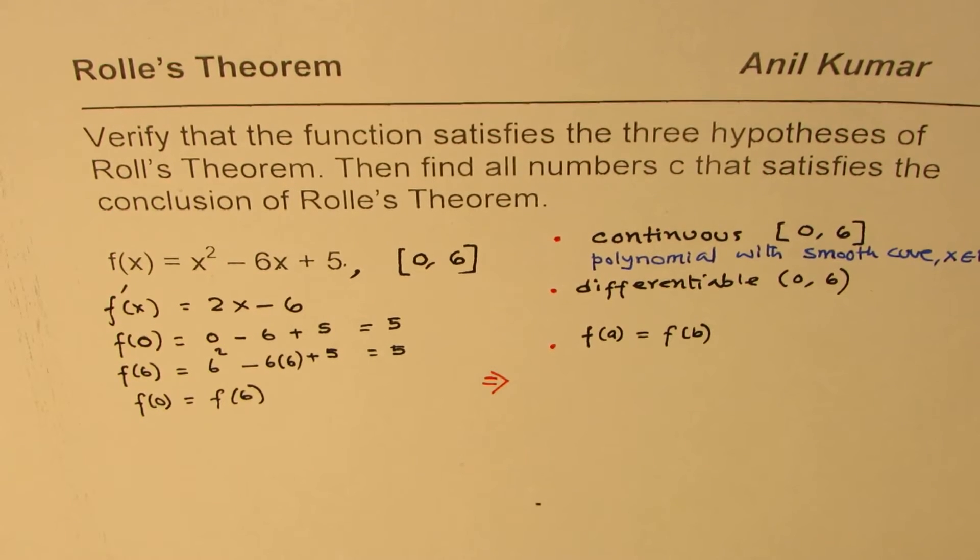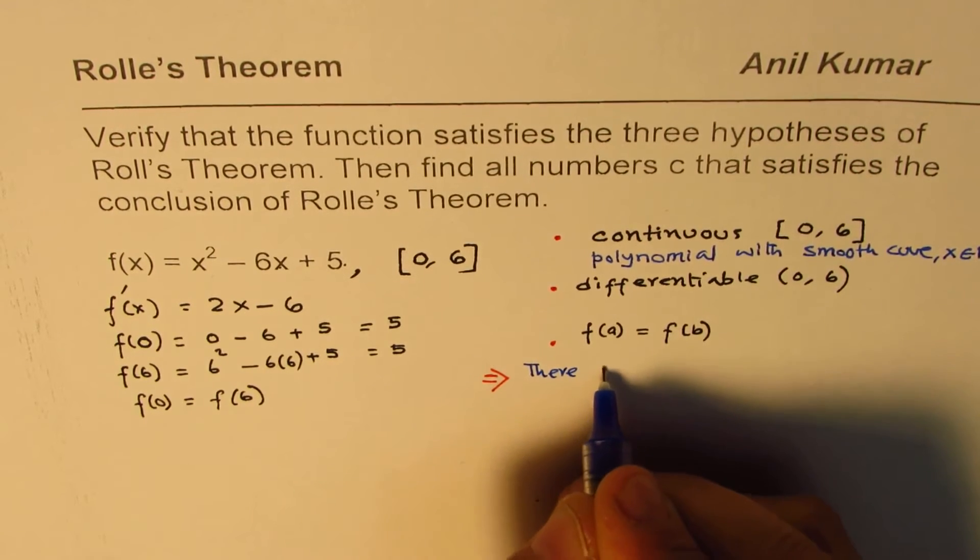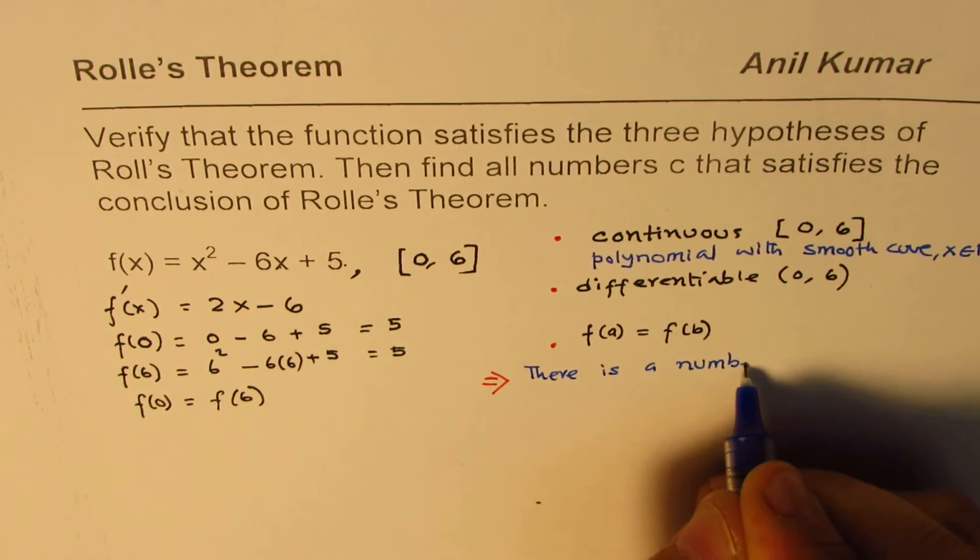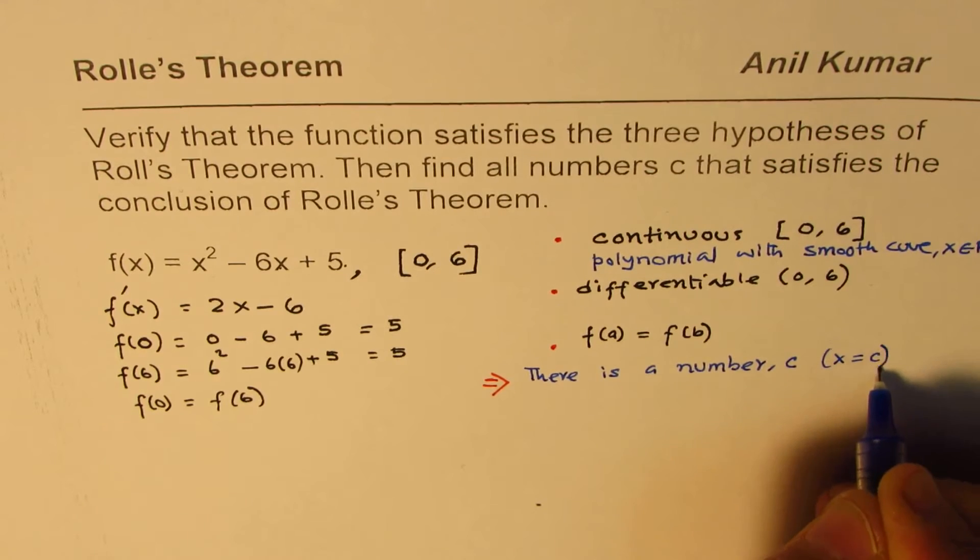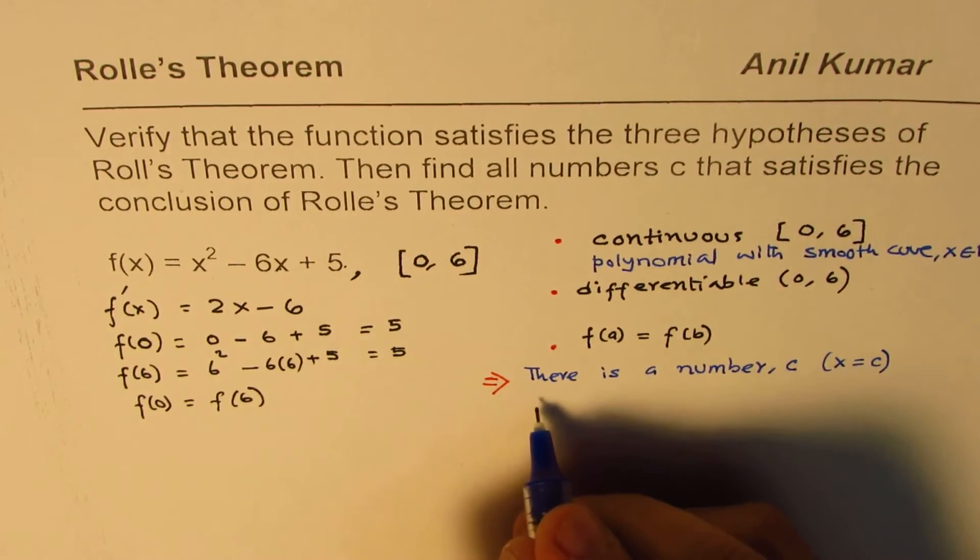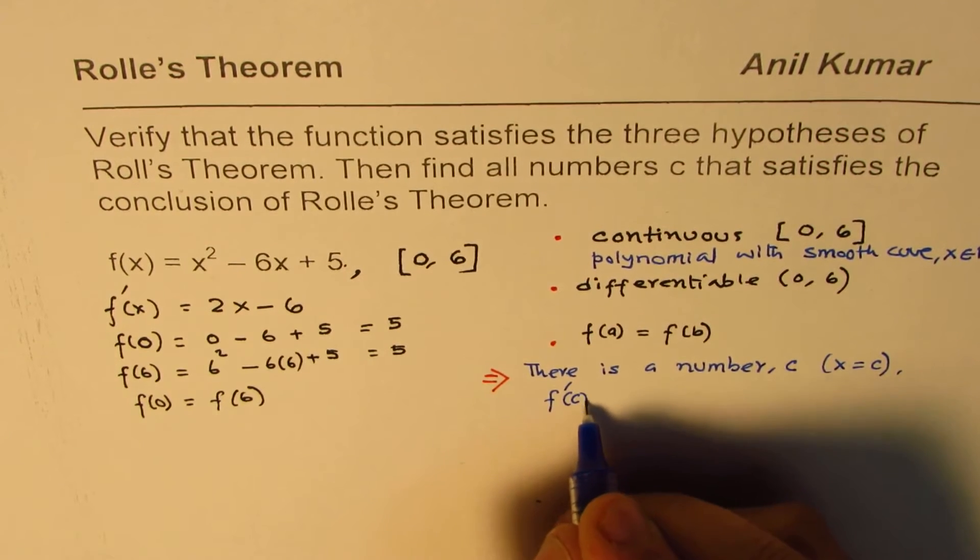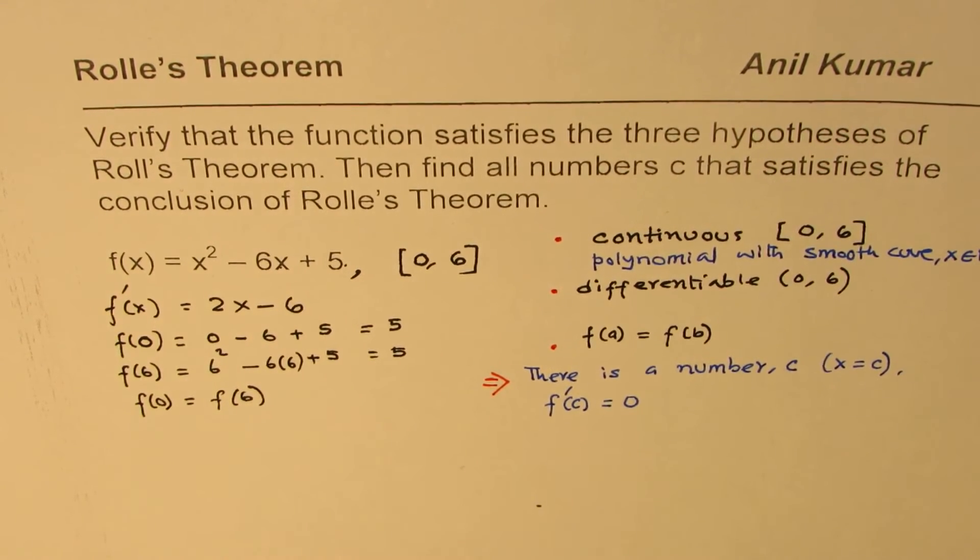...it implies that there is a number c, that is, x = c, number c, that is to say, at x = c, where the derivative is equal to 0. That is what it means.